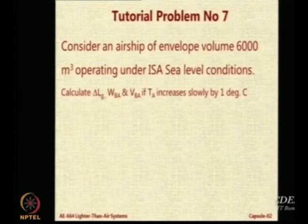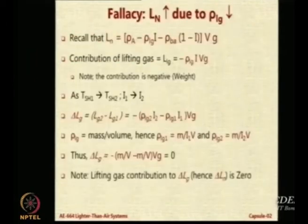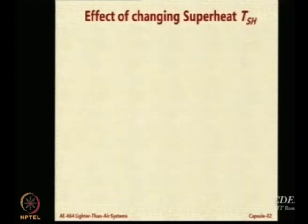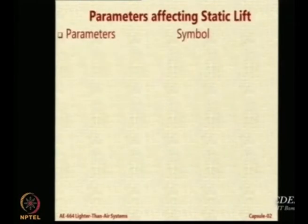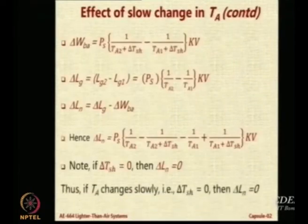Because it is a slow change in temperature, we have to refer to the previous formulae. This is the formulae for slow change in the temperature. Using this particular formulae, you will have to calculate for an airship that is flying at sea level under ISA conditions.